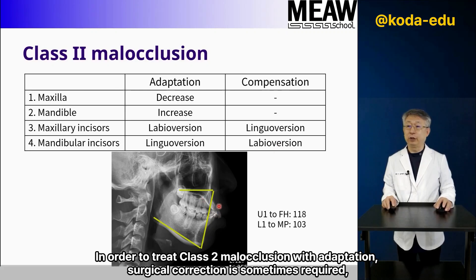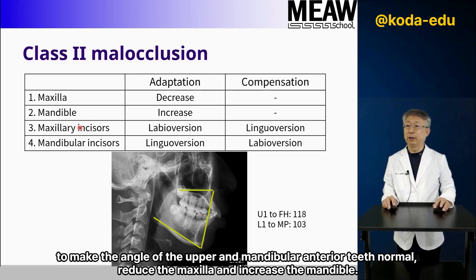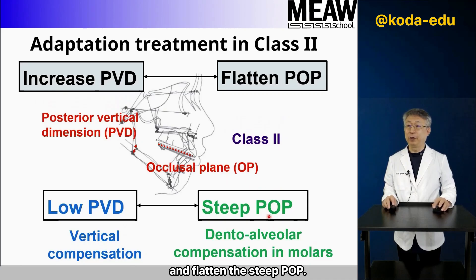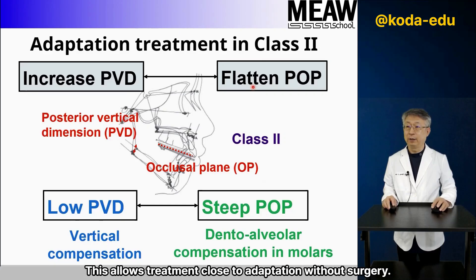In order to treat Class 2 malocclusion with adaptation, surgical correction is sometimes required — reducing the maxilla and increasing the mandible to normalize the angle of the upper and lower anterior teeth. The MEAW orthodontic approach adapts Class 2 malocclusion by increasing the reduced posterior vertical dimension and flattening the steep POP, allowing treatment close to adaptation without surgery.